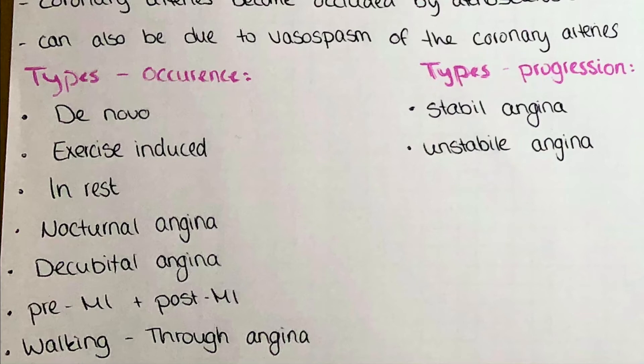Another type is when chest pain occurs at rest. This is called unstable angina, where a ruptured blood plaque and vasoconstriction lead to temporary occlusion of the coronary arteries. Another type we differentiate is when angina pectoris only occurs at night when the patient is sleeping and the heart is able to relax. This is similar to decubital angina, which only occurs when the patient is lying, but here we do not differentiate whether the patient is lying awake or asleep.